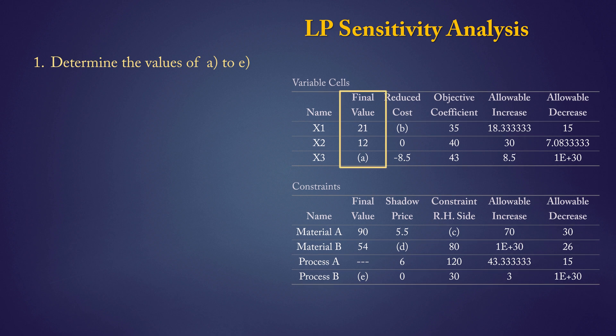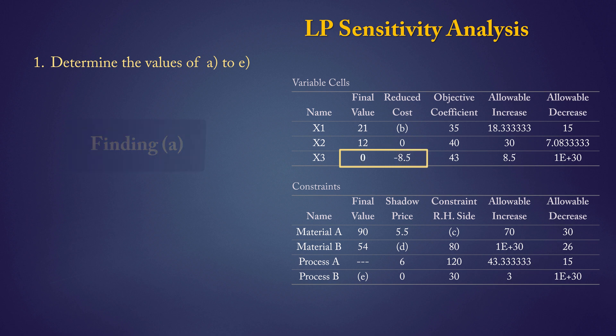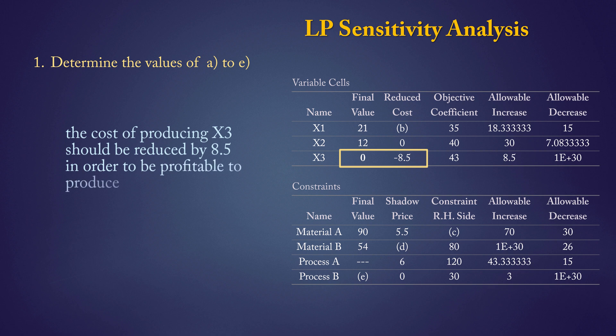The final value column represents the decision variable values at optimal solution. For A, the value of x3 at optimal solution will be 0, because we have a non-zero reduced cost of negative 8.5. Whenever there is a reduced cost that is not 0, the value of the decision variable is 0 at optimal solution. Since this is a maximization problem, the profit on x3 needs to improve by at least 8.5 to make x3 profitable for production.